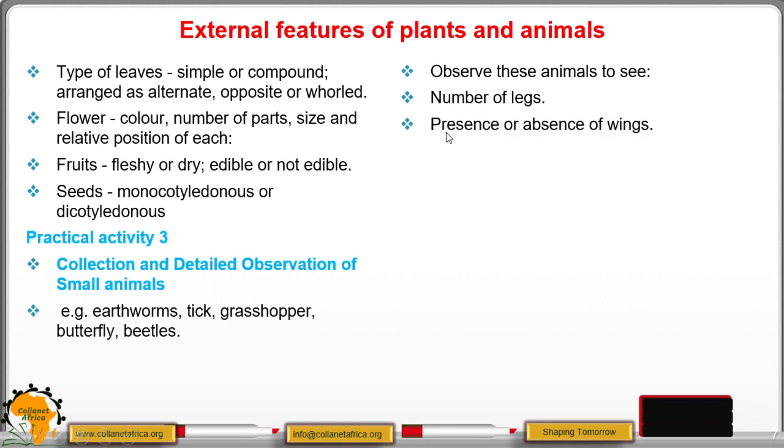Then presence or absence of wings. For example, earthworm and a tick do not have wings, but these others that fly have wings. The number of antennae, which are sensory organs on their heads. So look, examine them, and then the body covering. What covers their bodies?